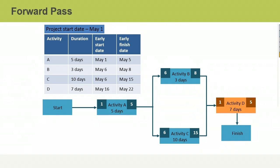Let's walk through a forward pass. You are managing a project and have created a schedule network diagram. To perform a forward pass, you begin with the first activity in the project, Activity A. The earliest date Activity A can start is May 1st. You add the duration of Activity A to its early start date and subtract 1 since the start date is also a working date, then calculate its early finish date, which is May 5th.